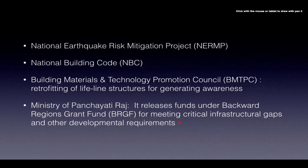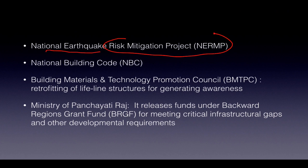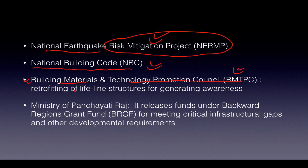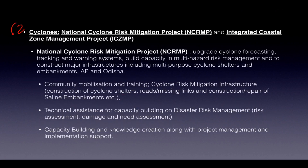The National Earthquake Risk Mitigation Project addresses this. A National Building Code needs to be developed so buildings have earthquake resilience. The Building Materials and Technology Promotion Council helps with retrofitting of lifeline structures. The Ministry of Panchayati Raj, under the Backward Regions Grant Fund (BRGF), can meet critical infrastructural gaps in states like Chhattisgarh and Jharkhand.